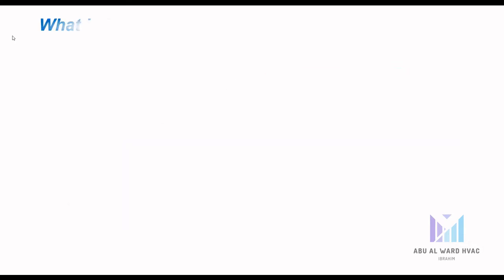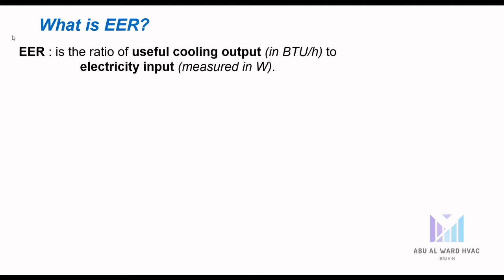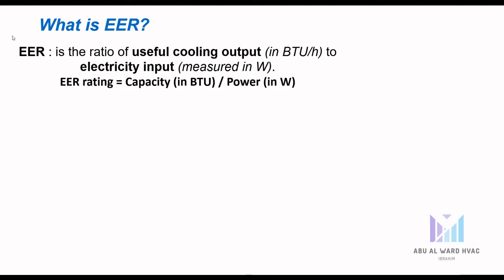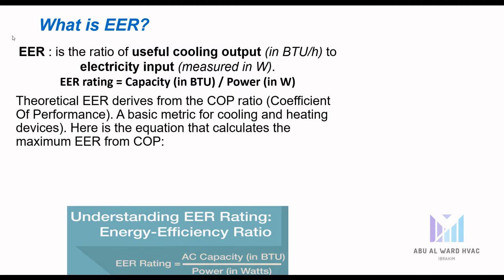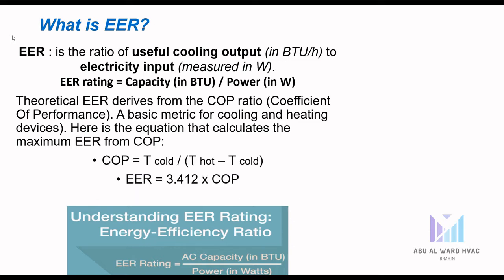The other consideration is the phase-out of some DX units to new technologies. Now, what is the EER? EER is the ratio of useful cooling output in BTU to electricity input measured in watts. The EER rating is capacity divided by power. In theoretical definition, the EER derives from the COP ratio as follows: COP equals T_cold divided by (T_hot minus T_cold).